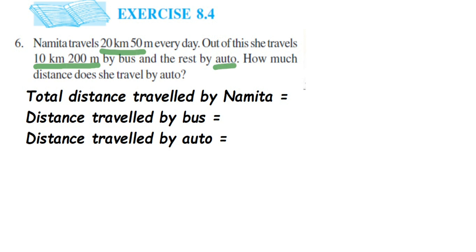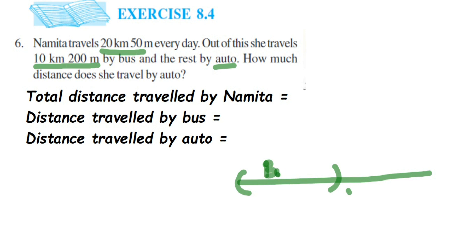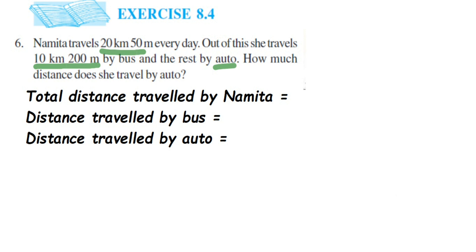We know that the total distance is 20 km 50 m. If we remove the distance traveled by bus from the total distance, the remaining distance is nothing but the distance traveled by auto. So we have to subtract the bus distance from the total distance.